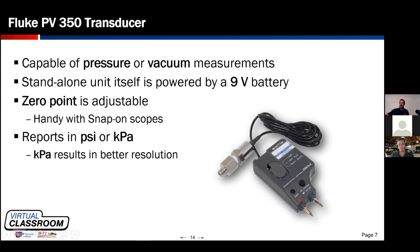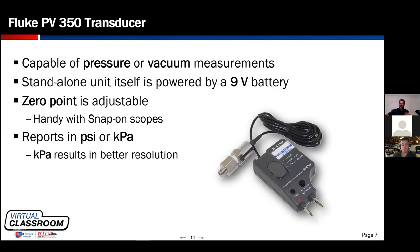One thing you'll notice on a Snap-on scope: if you zero out the scope so pressure transducers read zero psi at atmospheric pressure, then crank an engine over and start it, the entire pattern seems to shift negatively about 10 psi — the scaling is a bit off. The PV350 has a knob that works like an old radio dial, allowing you to zero out the waveform while the engine is running, overcoming that limitation. It also has a selectable switch offering PSI or kPa — kilopascals, a metric scale.